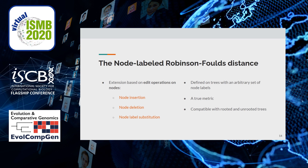Our second and most recent extension of the Robinson-Foulds edit distance to labeled trees is based on edit operations on nodes. We introduced three operations: node insertion, node deletion, and node label substitution. This distance has the particularity of being defined on trees with an arbitrary set of node labels. Moreover, like RF and ELRF, it is a true metric and is defined for rooted and unrooted trees.